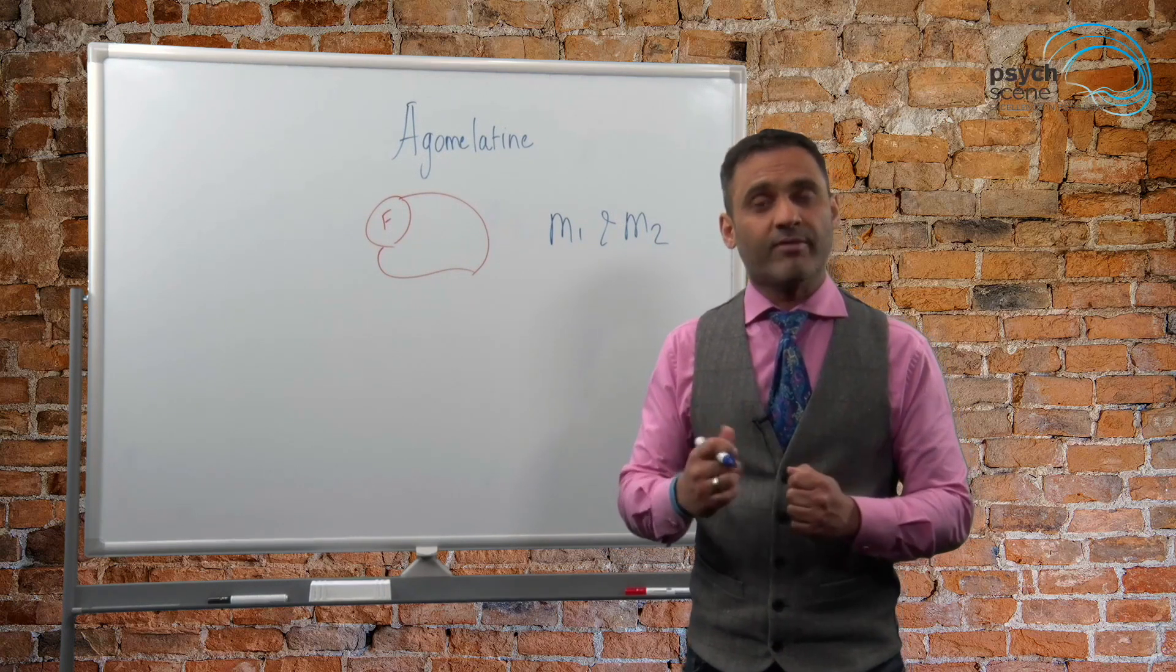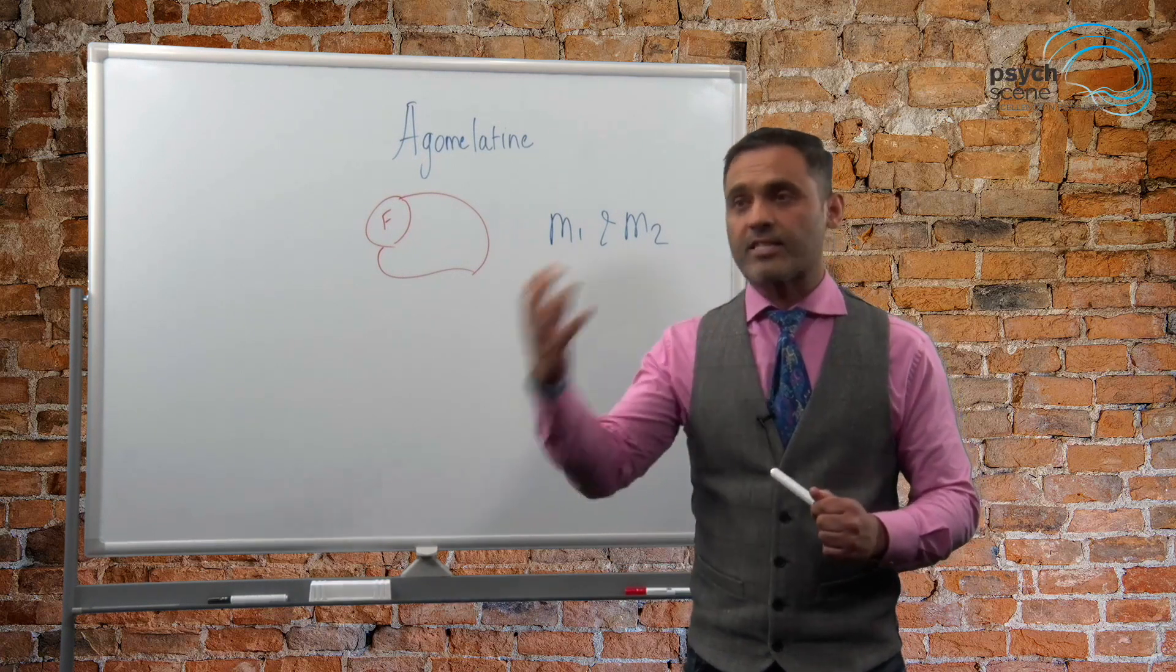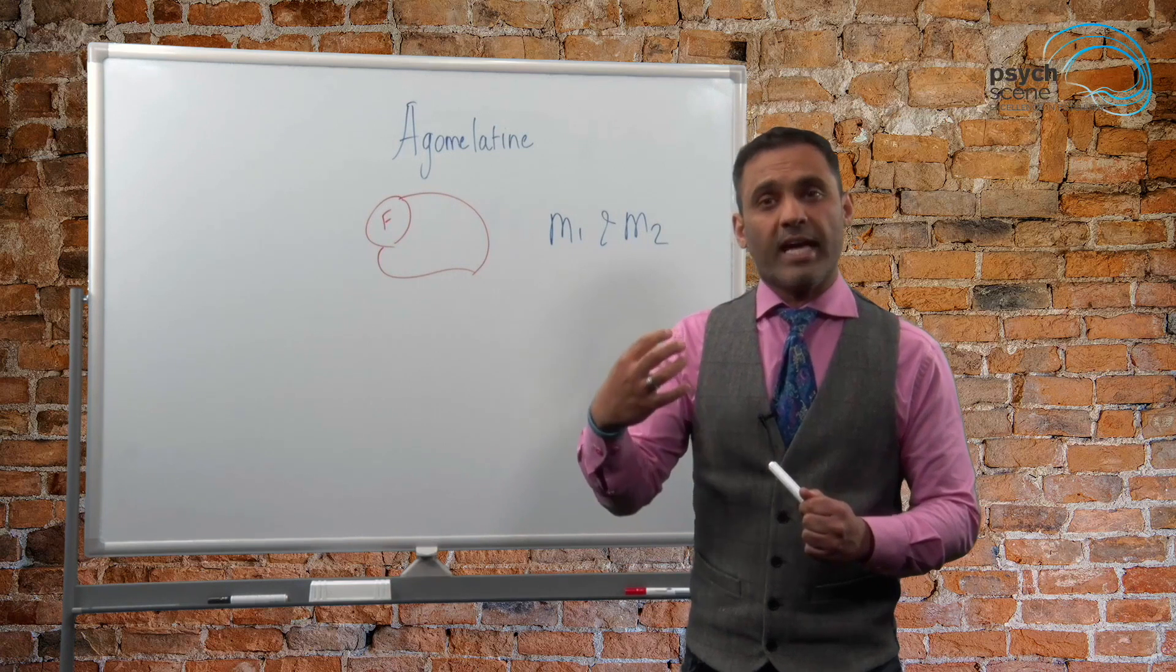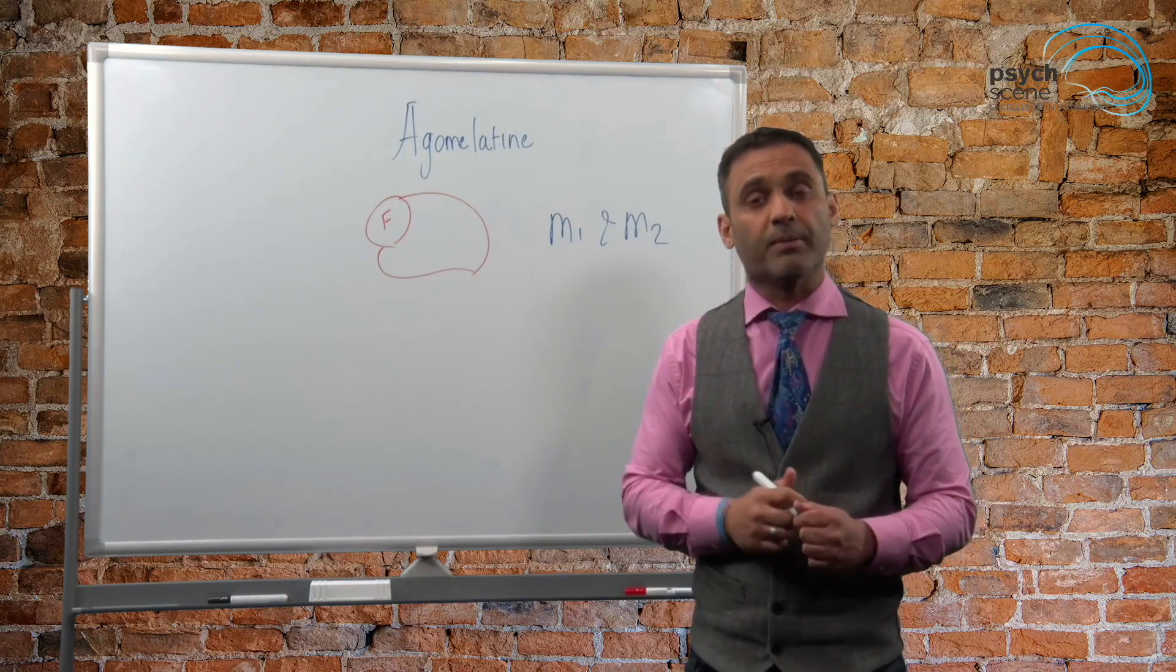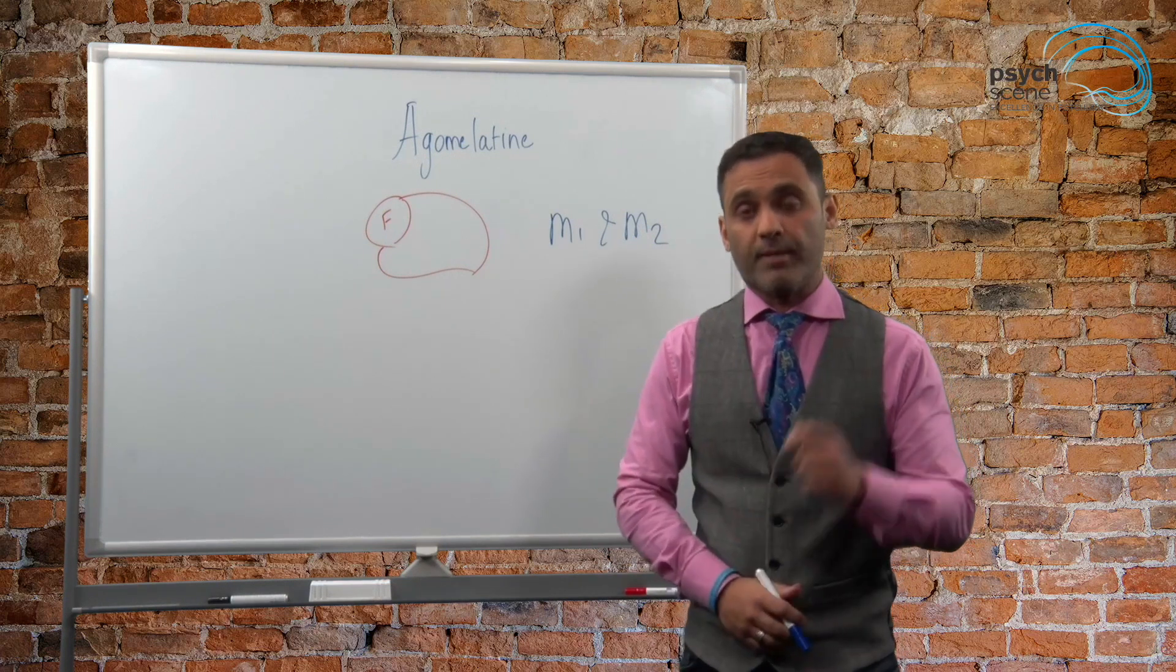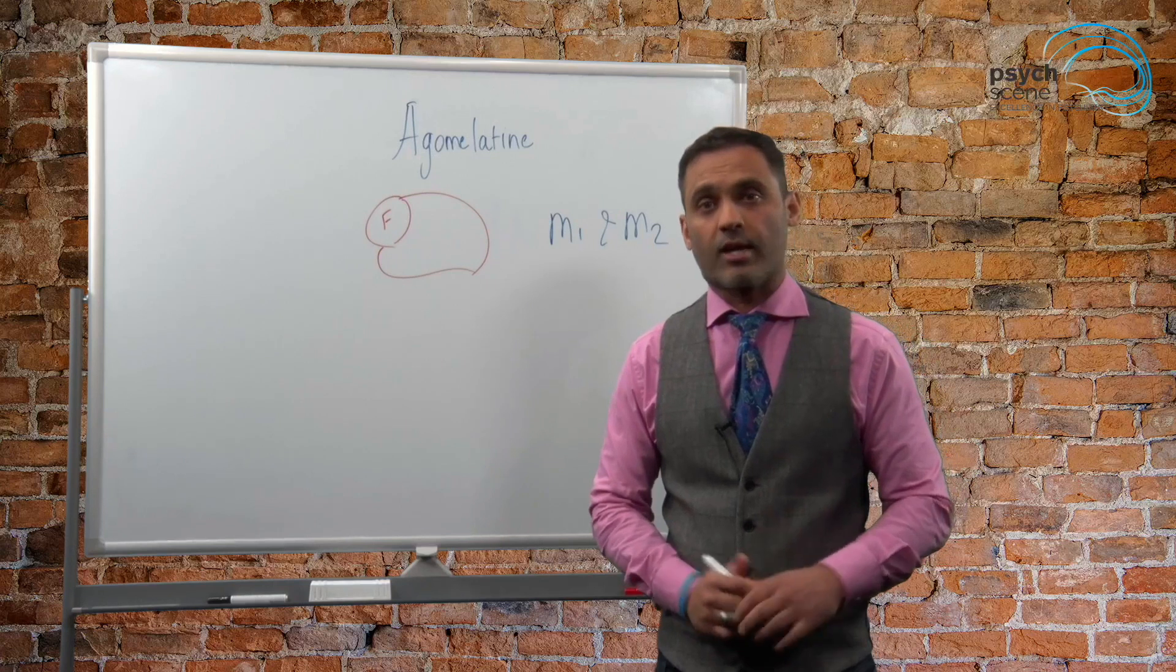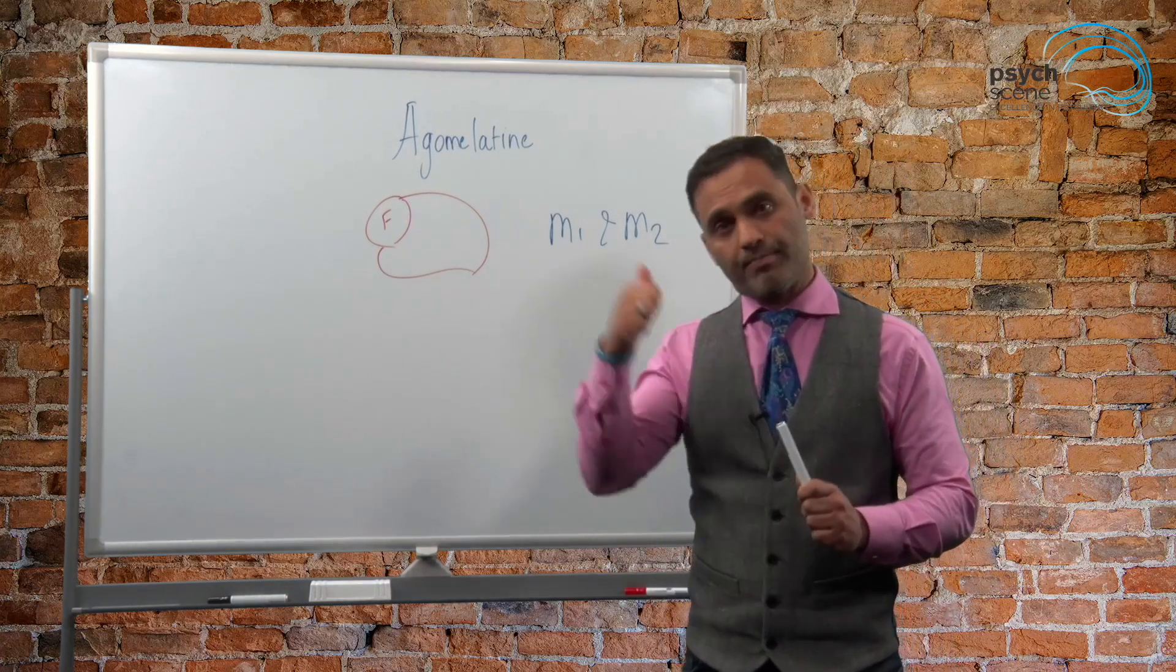It does not have the antihistaminergic activity like for example Mirtazapine does or Amitriptyline does. So it's less likely to lead to that grogginess or sedation that some people can complain of with Mirtazapine. We have done a video on Mirtazapine on this channel so do check that out. So it has this M1, M2 agonistic activity as one property.